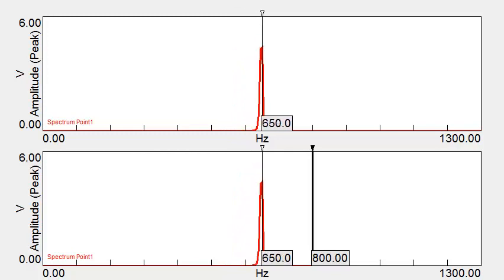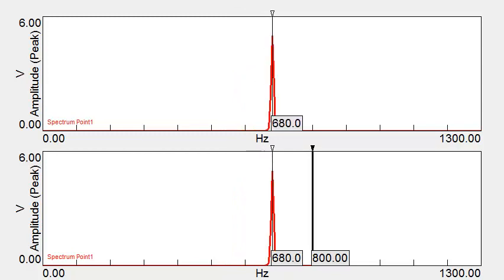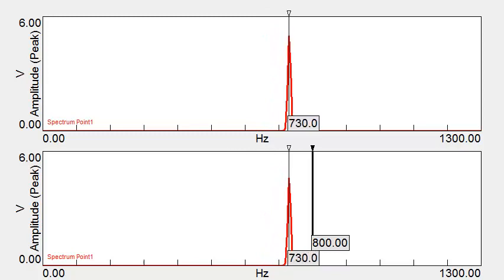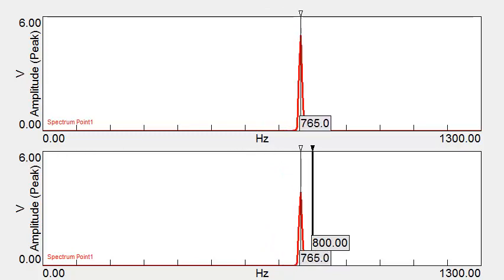As the incoming signal nears the bandwidth, the signal starts to attenuate or be reduced. When the incoming signal hits the bandwidth, it begins to be mirrored about the bandwidth.